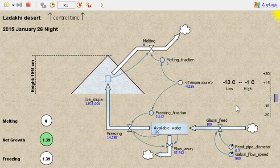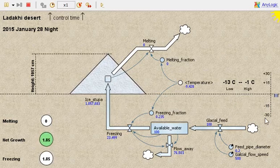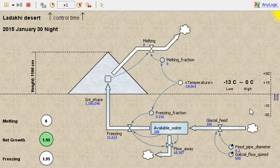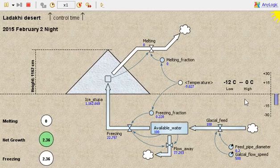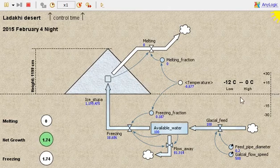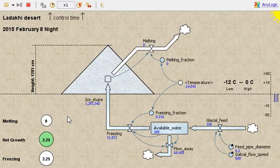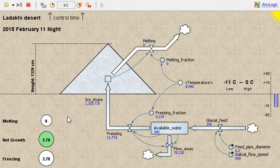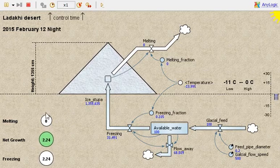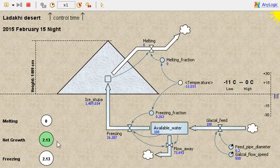On average it's below minus 10 down to even minus 30 or less, and it's always below freezing level in the months of January and February. Since we have no melting in these months, this will result in a high net growth of the artificial glacier. We can monitor the melting and freezing net growth here.